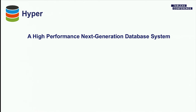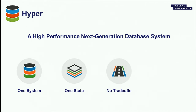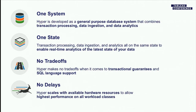So what is Hyper? Hyper is a high-performance, next-generation database system. We designed it with four core principles in mind: it's one system operating on one state, making no trade-offs, and with no delays. 'One system' means Hyper is a general-purpose database system that combines transaction processing, data ingestion, and data analytics. Before, you had a separate data warehouse and a separate transactional system. We said no — you want all that in one system so you can have the latest data right at your fingertips.